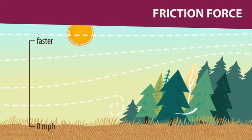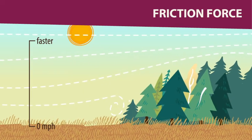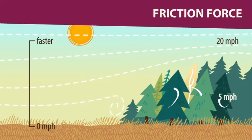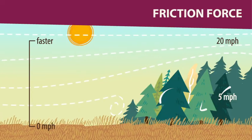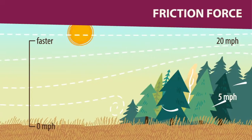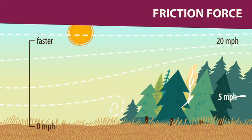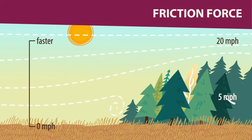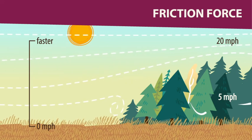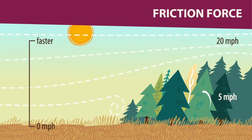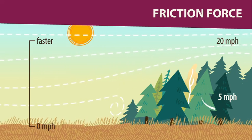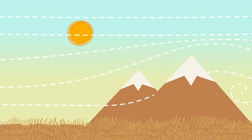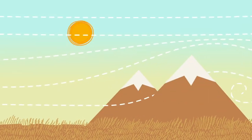When you add some trees, the more vegetation there is, the more friction and the slower the wind. That means you can have eye-level winds that are five miles an hour in the trees and winds that are 20 miles an hour above the trees.